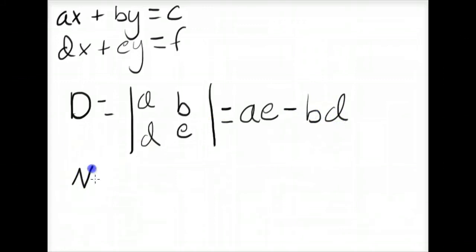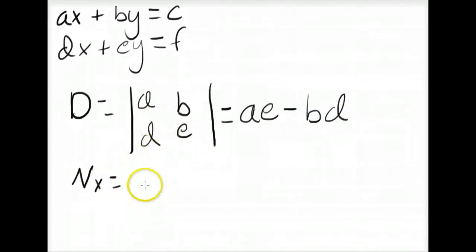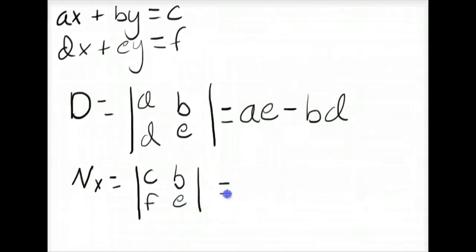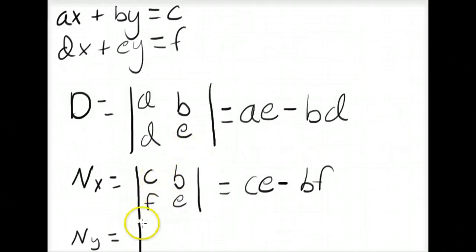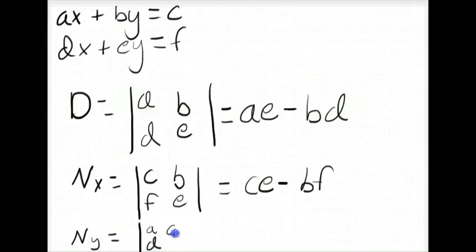The numerator of the X term is the same as the denominator except we replace the X coefficients with C and F, giving the determinant C, F, B, E, which expands to CE minus BF. The numerator of Y is the same denominator determinant but replacing the Y coefficients with C and F, giving A, D, C, F, which expands to AF minus CD.